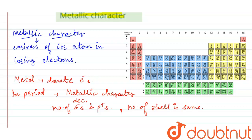Since electrons and protons are added to the same number of shells across the period, the nuclear force of the protons attracts the electrons very closely. The nuclear force is so strong that it holds the electrons very close, making it very difficult for the atom to lose its electrons.